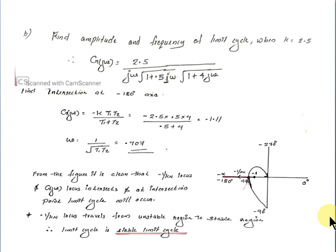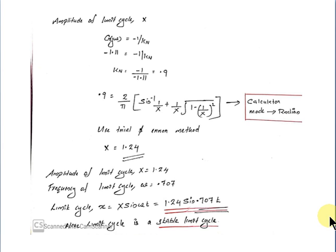The limit cycle is a stable limit cycle since the minus 1 by KN locus travels from the unstable region to the stable region. At the intersection, G(jω) equals minus 1 by KN, giving KN equal to 0.9. Substituting KN equal to 0.9 into the equation and solving by trial and error, X is equal to 1.24. The frequency of the limit cycle is ω equal to 0.707. So the limit cycle is X equal to 1.24·sin(0.707t).